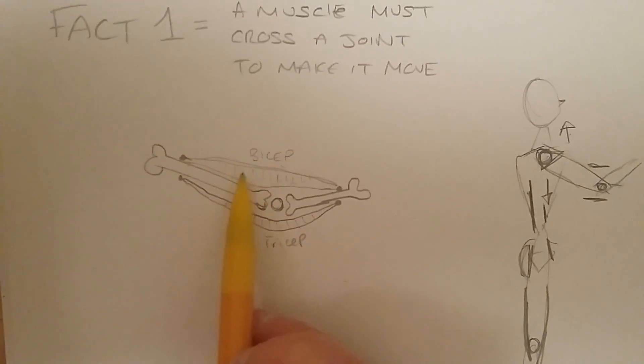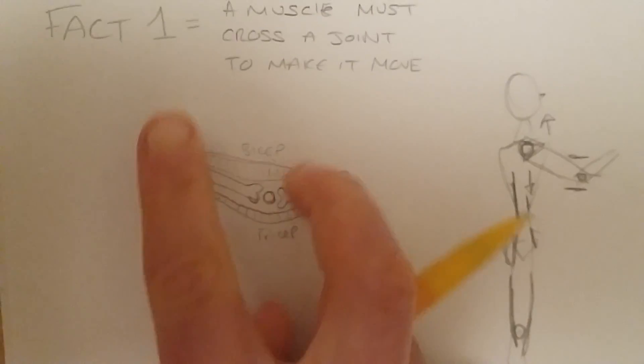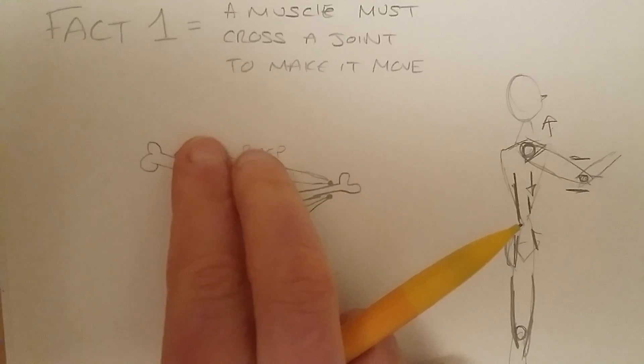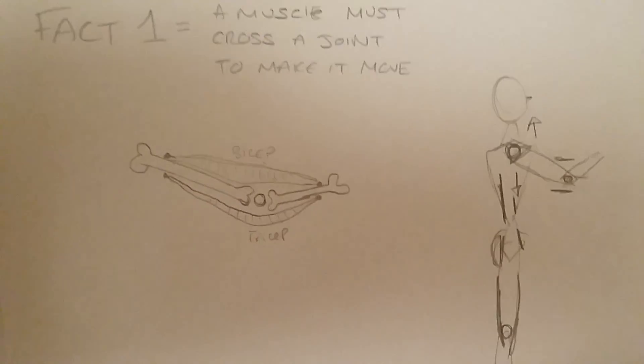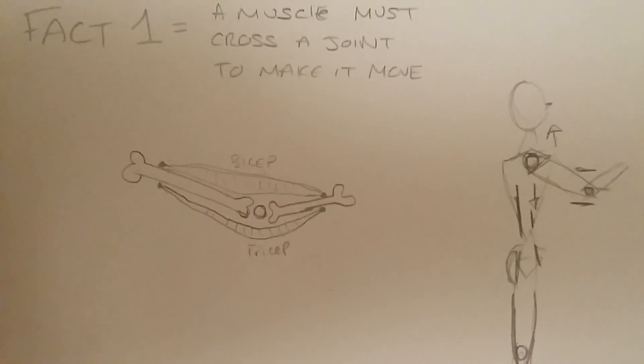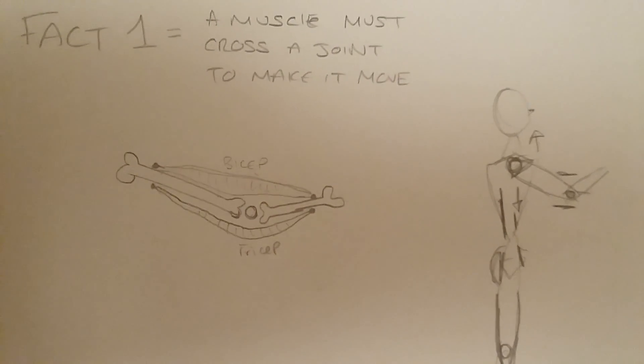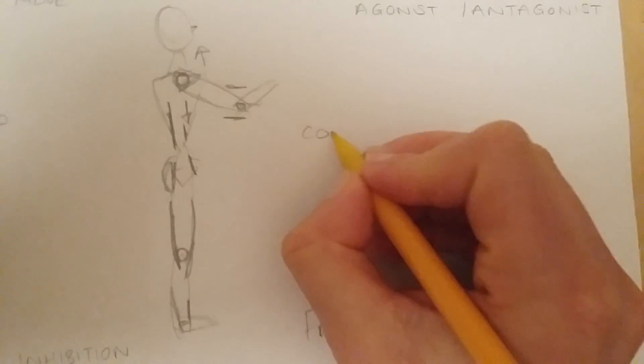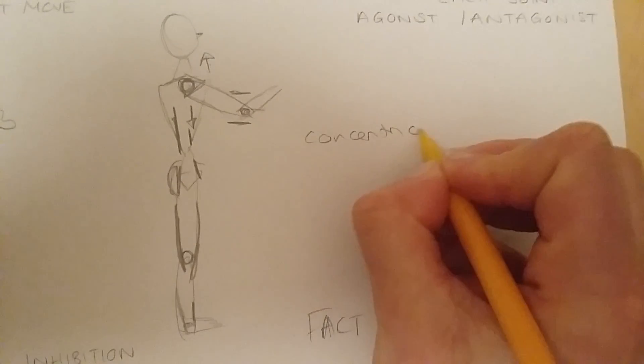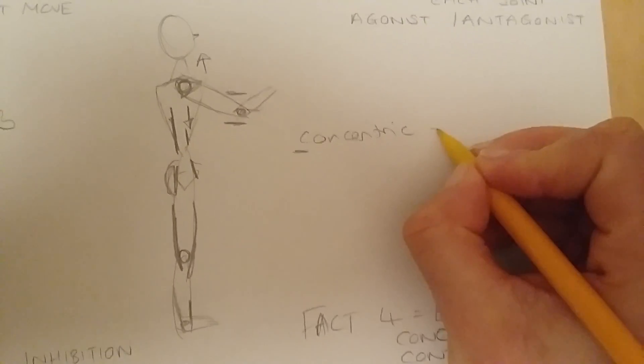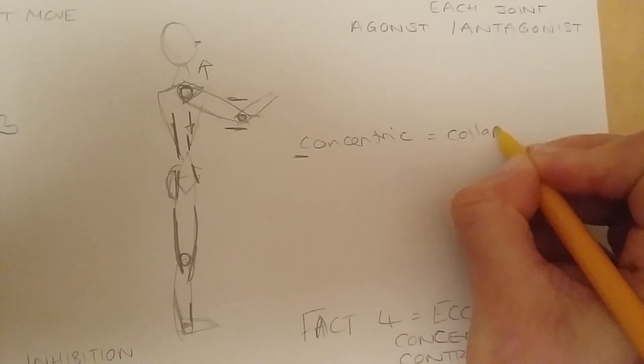And it means that basically these muscle fibers are getting shorter and they're concertining, they're contracting, they're collapsing, they're getting closer together. Now that's how I like to remember it, is that concentric is basically getting smaller. So the C, it means that the muscle is collapsing.